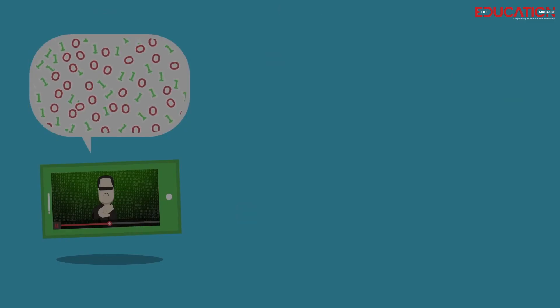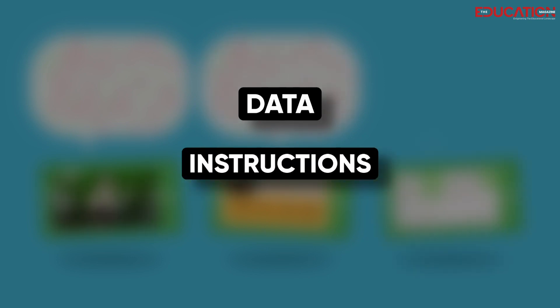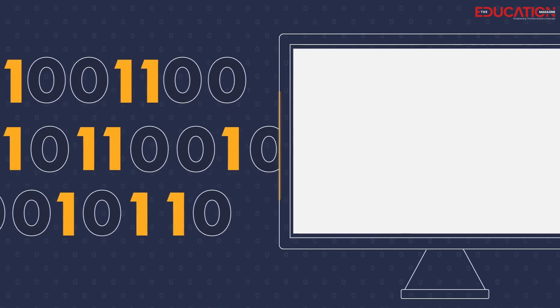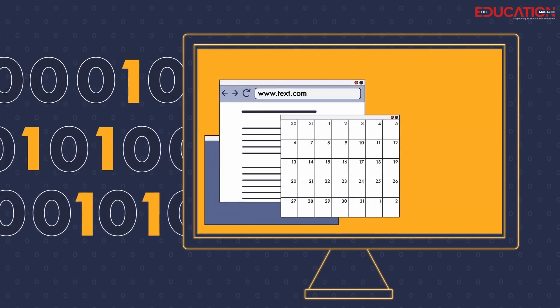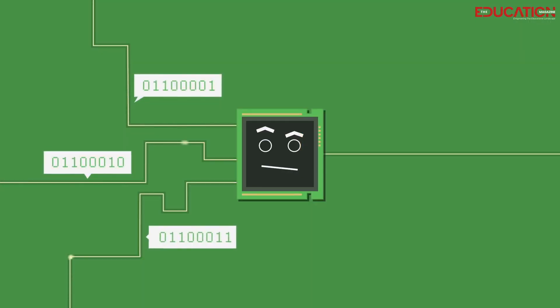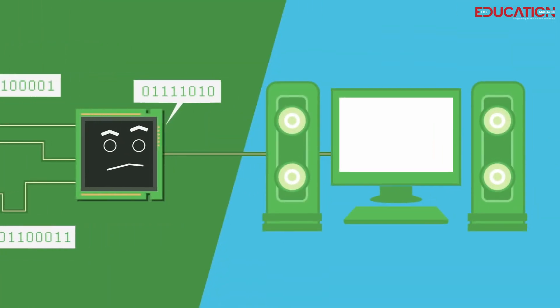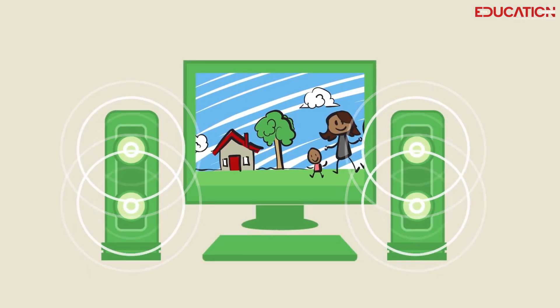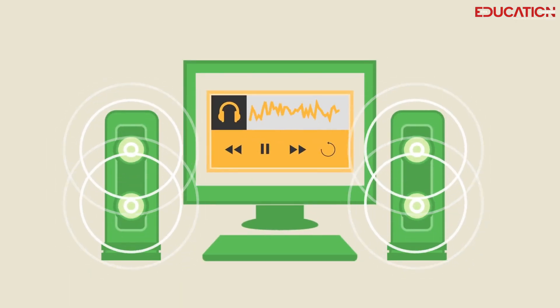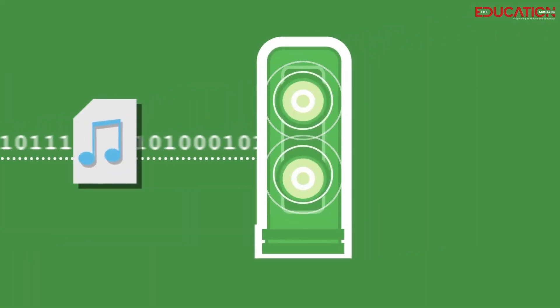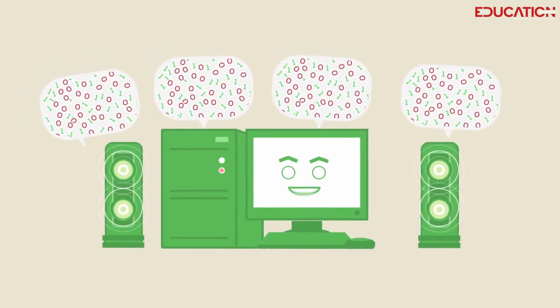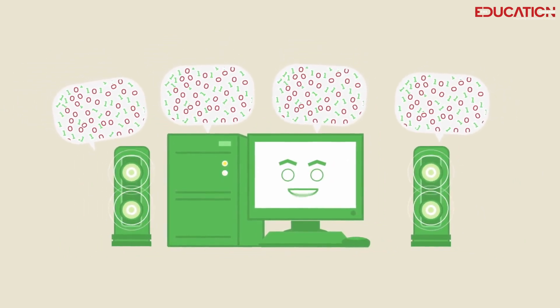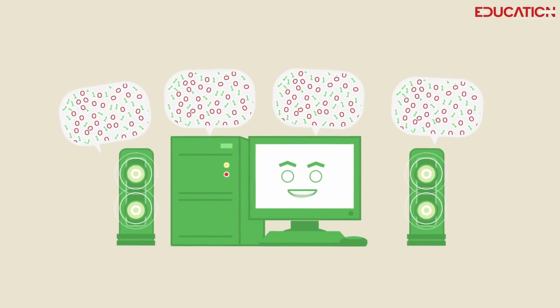Binary code is used in computers to represent data, instructions, and memory addresses. Data is anything a computer needs to store, such as numbers, letters, images, and sounds. Data is stored in binary code on the computer's hard drive, RAM, and other storage devices. Instructions are the commands that tell the computer what to do, and they are stored in binary code on the computer's hard drive or RAM. Memory addresses are the locations where data and instructions are stored in the computer's memory, and they are also stored in binary code.